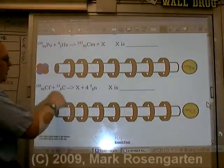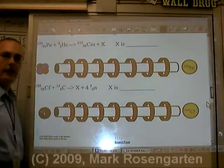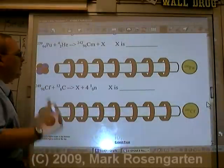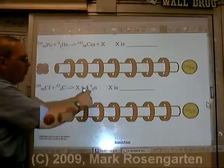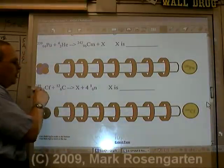Anyway, the nuclear charge of carbon is plus 6, so that can move through the particle accelerator very easily. You form a new element and four neutrons are thrown out.